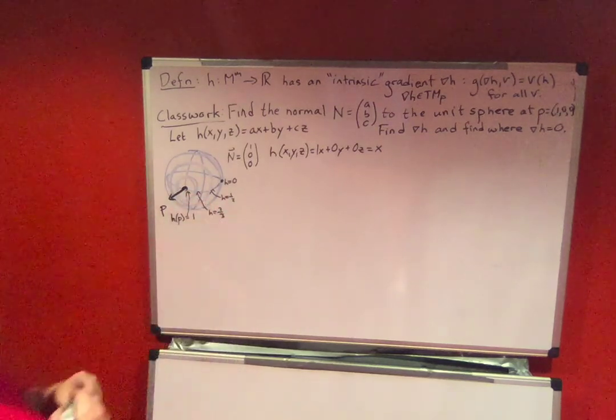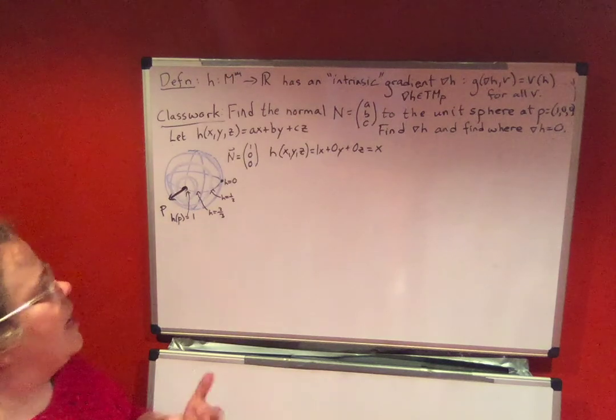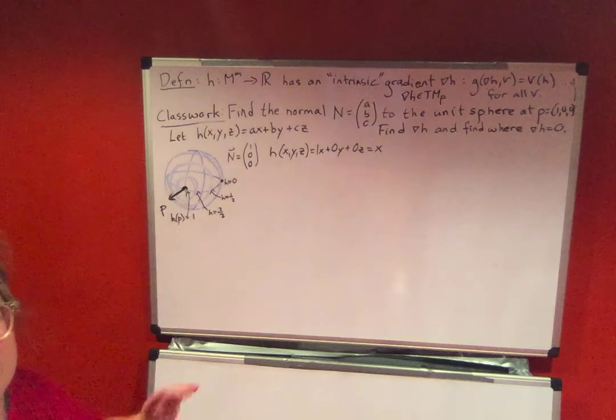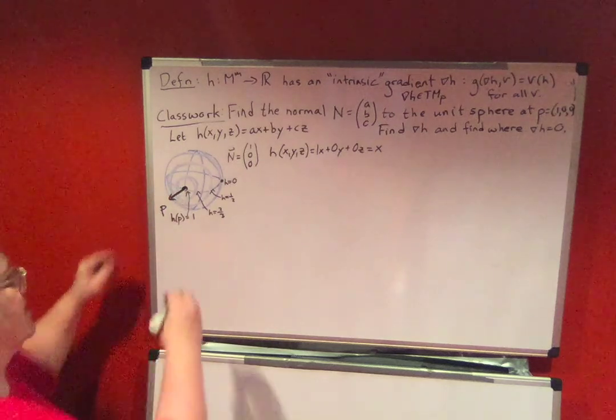Okay? So these are our different levels of h. And so when we find the gradient of h, we're going to see that this should be a max at P. We can see from the picture that there is a max at P.